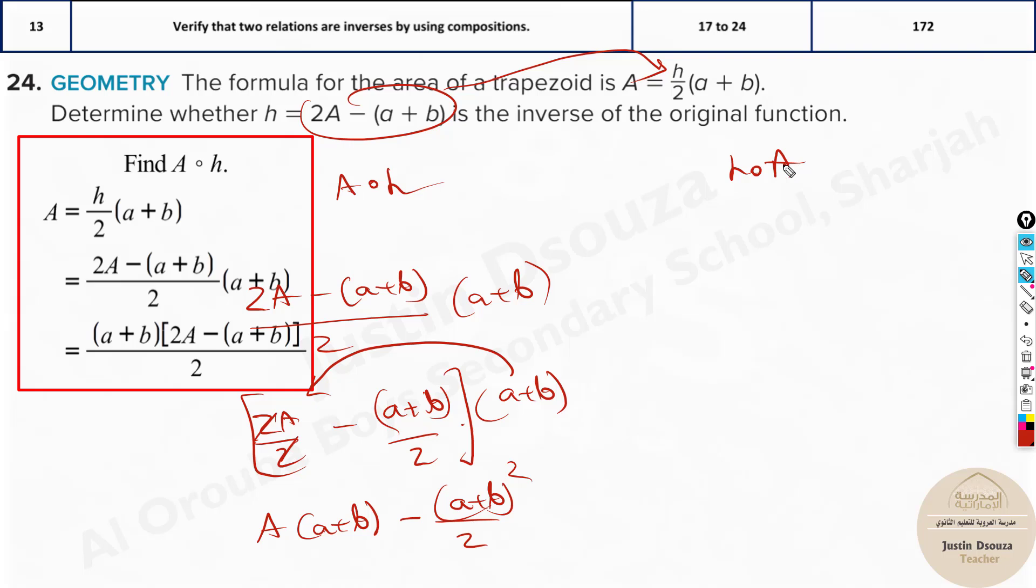So what we will do over here is, instead of h composition of A, instead of A you put this value. It's going to be 2 times, instead of A put h/2(a+b), minus (a+b). Now multiply this 2 inside. This cancels off. You are remaining with h times (a+b) minus (a+b). You can remove this, you can get (a+b) outside. It will be h minus 1.